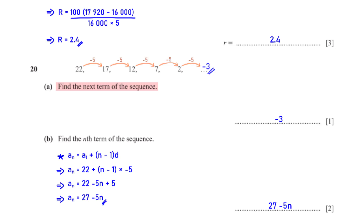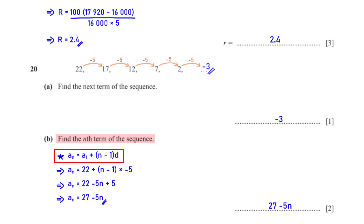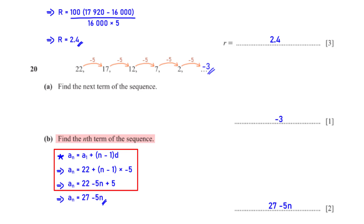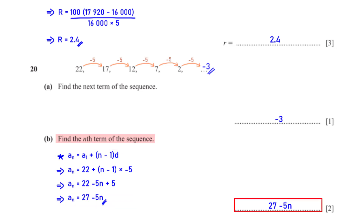Find the next term of the sequence. From the sequence we see that to get the next term we subtract 5 from the previous term, so subtracting 5 from 2 gives negative 3. For the nth term, since the terms have a constant difference, we use the formula: the first term a₁ is 22 and d is −5. Expanding gives −5n + 5, and grouping like terms with 22 gives the nth term as 27 − 5n.